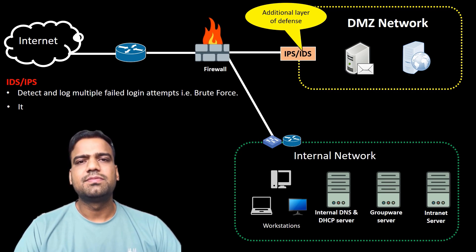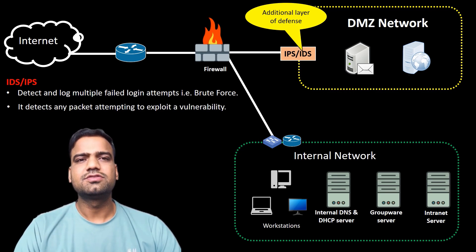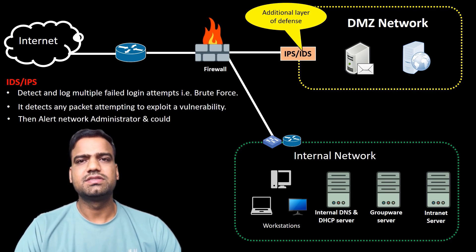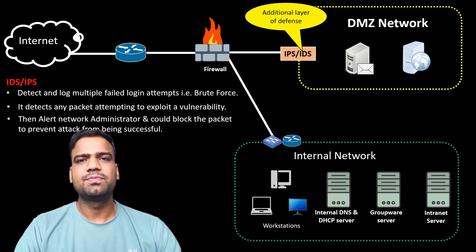The IDS might detect a packet that is attempting to exploit a vulnerability in a web server in the DMZ. The IDS could then alert the network administrator to the suspicious packet and block the packet to prevent the attack from being successful.